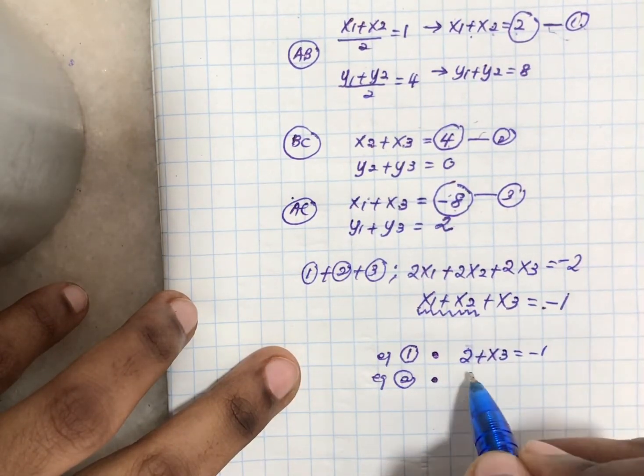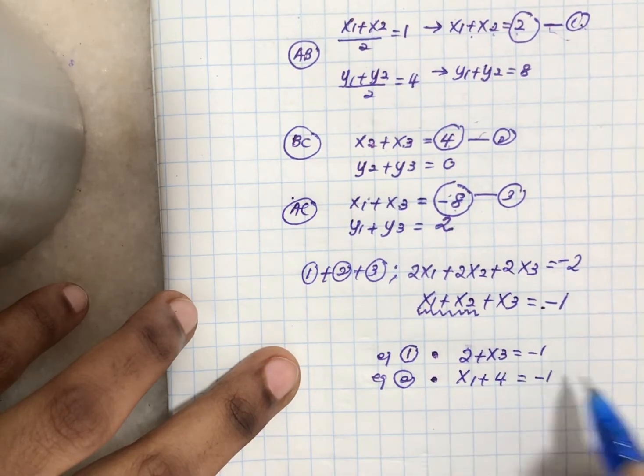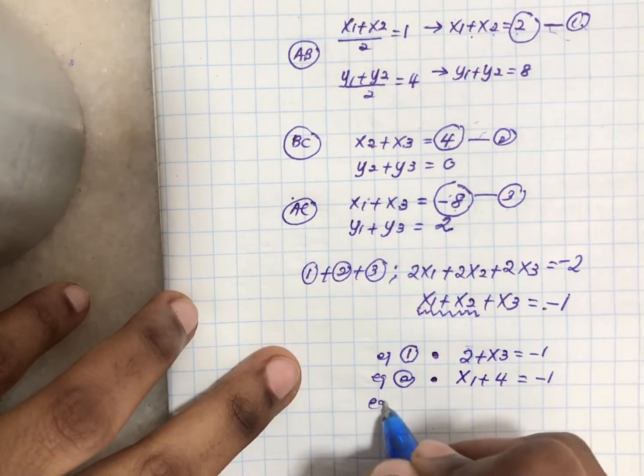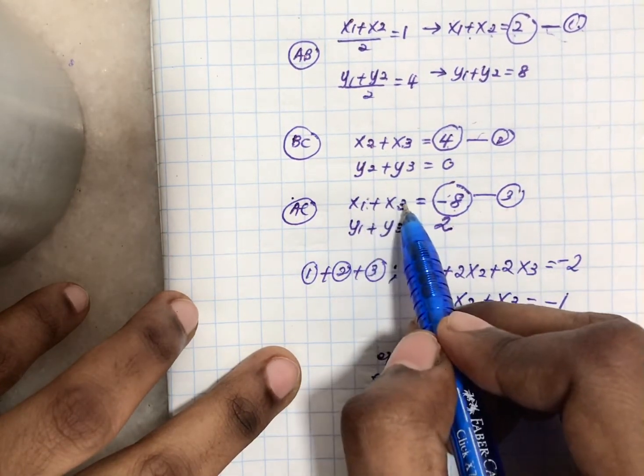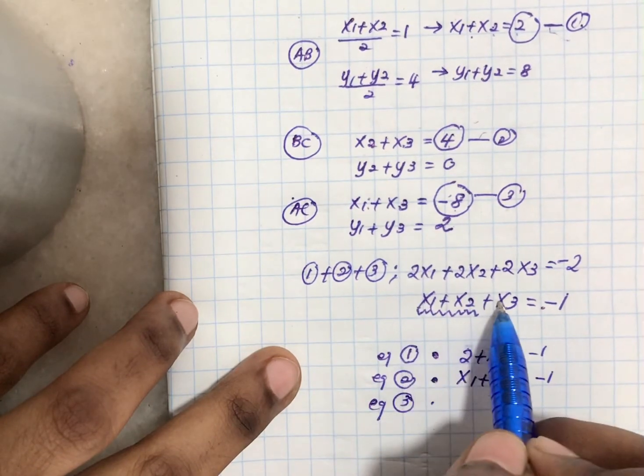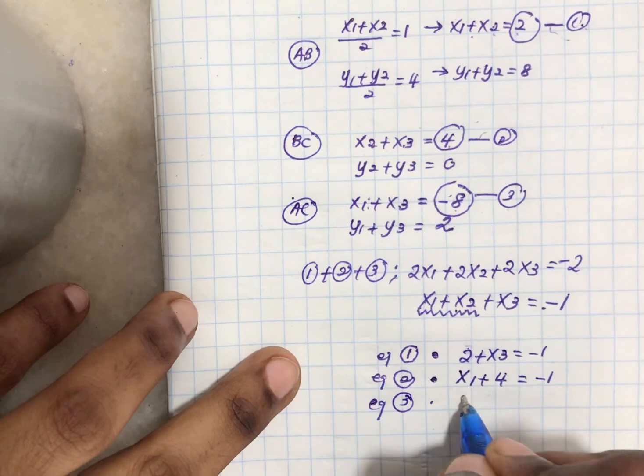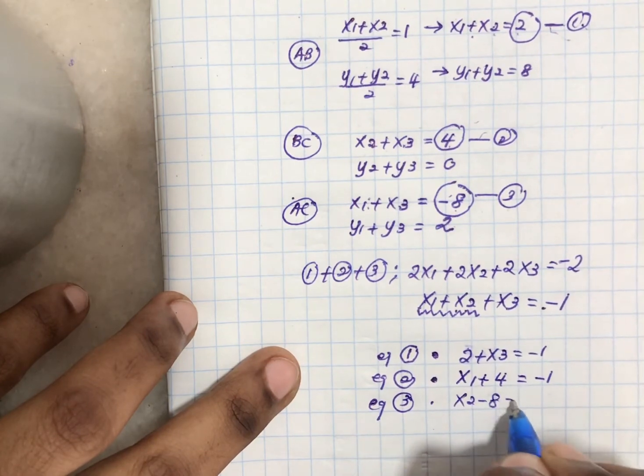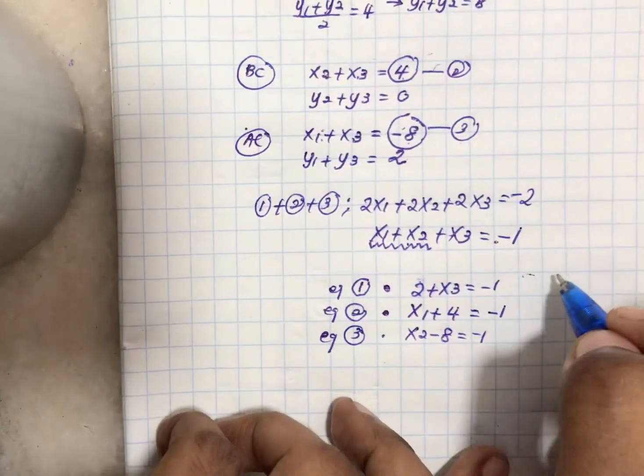From these equations we find x3 = -3, x1 = -5, and x2 = 7. Use the same method to find all your y-coordinates. Now I'm going to show you a shortcut on how to do this very fast.